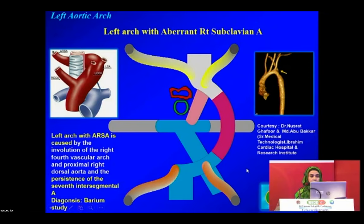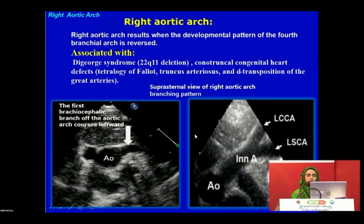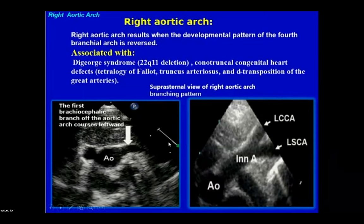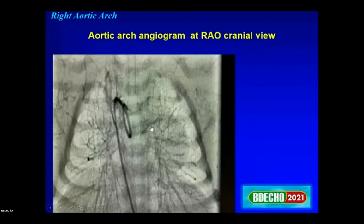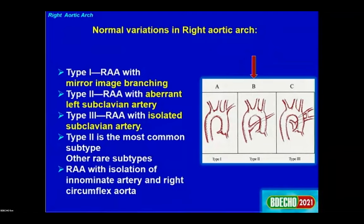Right aortic arch results when the development pattern of the fourth arch is reversed. It is associated with DiGeorge syndrome and conotruncal defects. On suprasternal view, the first division goes toward the left side. The chest X-ray shows the normal aortic knob absent on the left and present on the right. CT angiography of a 15-year-old male confirms the right aortic arch crossing the right bronchus.